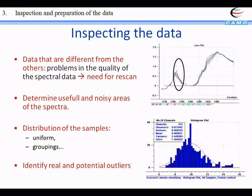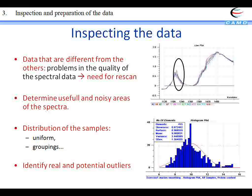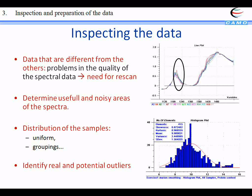You can also start to look at the different variables and identify areas that contain a lot of information — for example, a peak corresponding to a known component that is important in your analysis. Or you may know that some areas of the spectra are noisy and you can remove them.